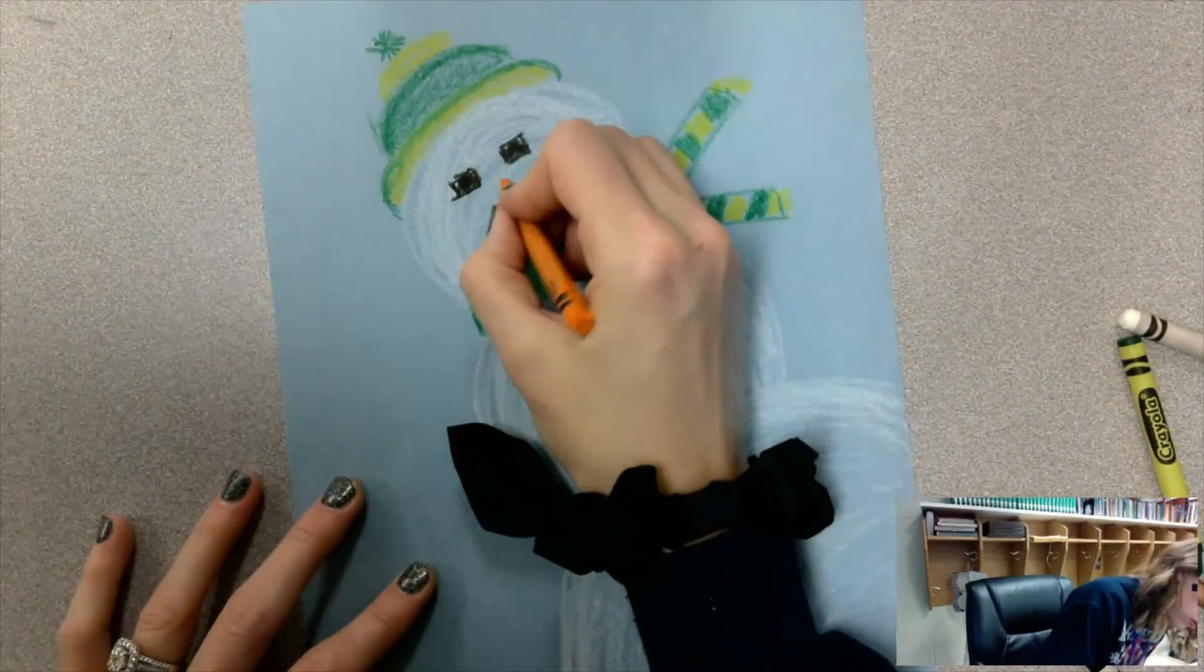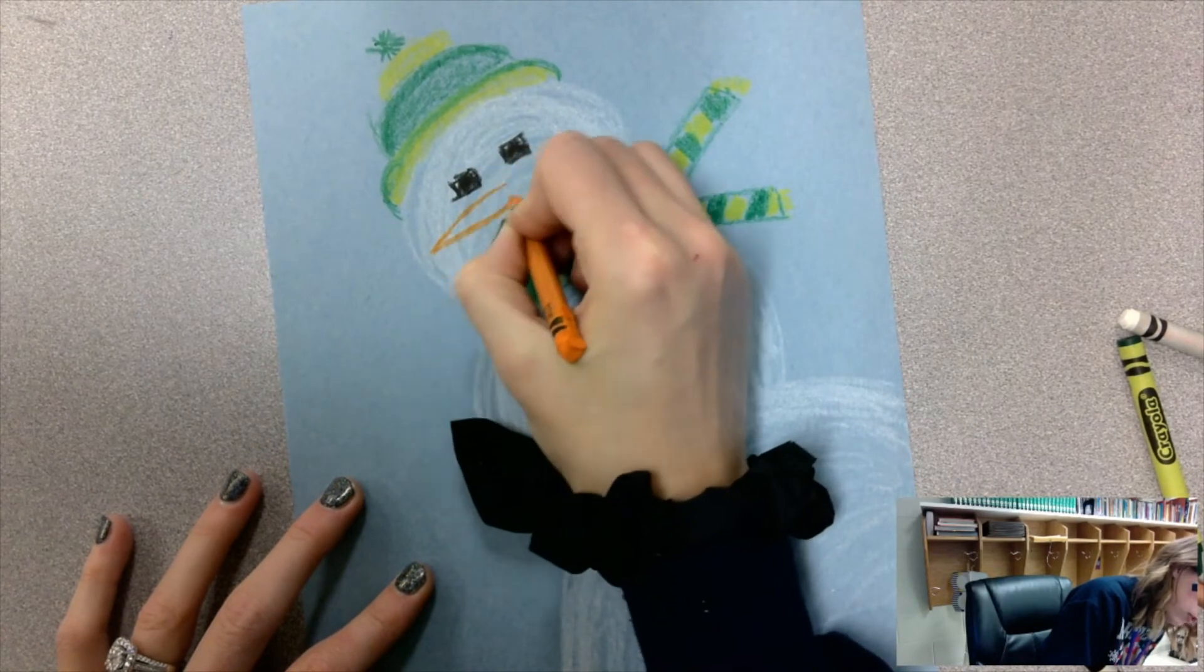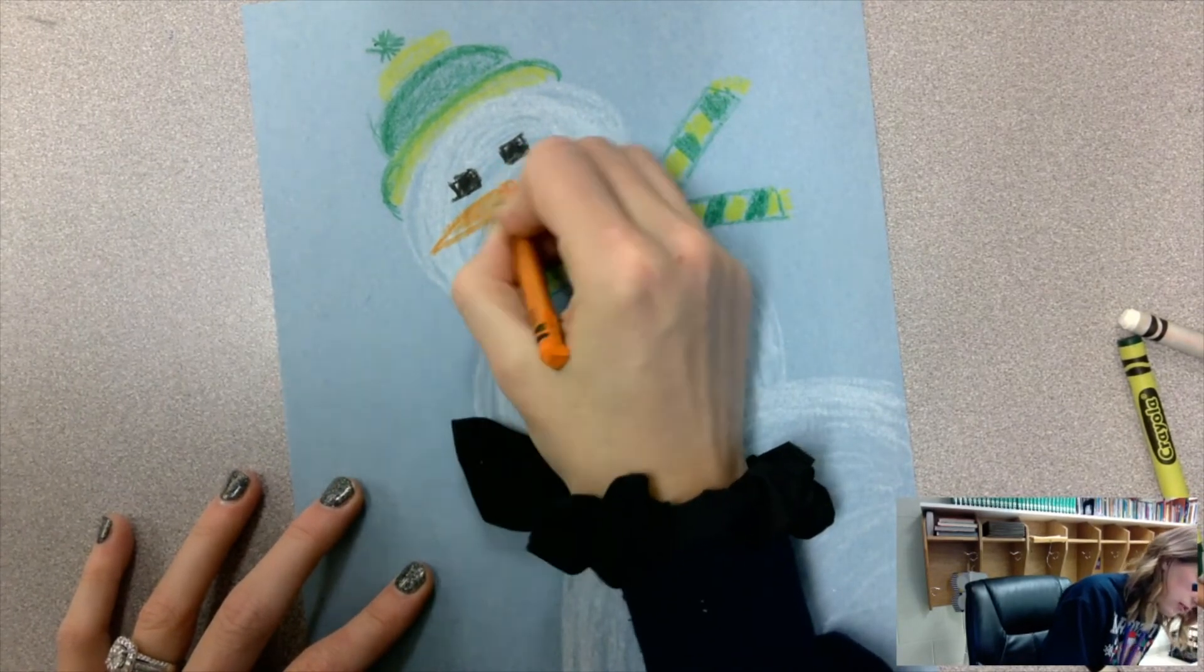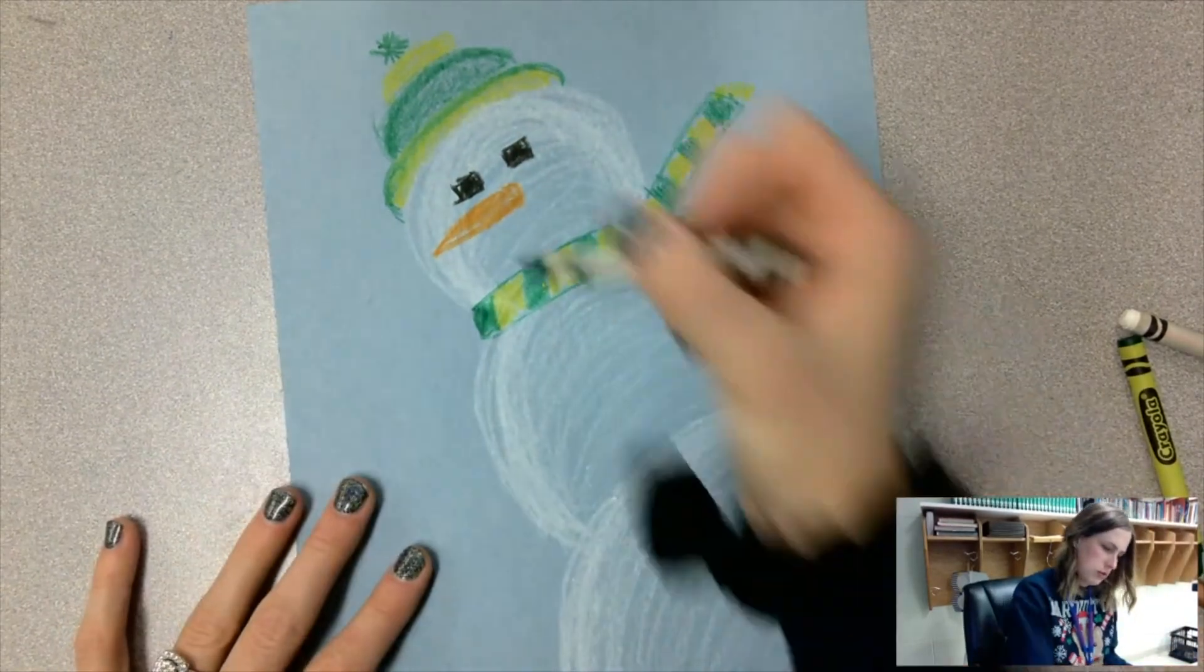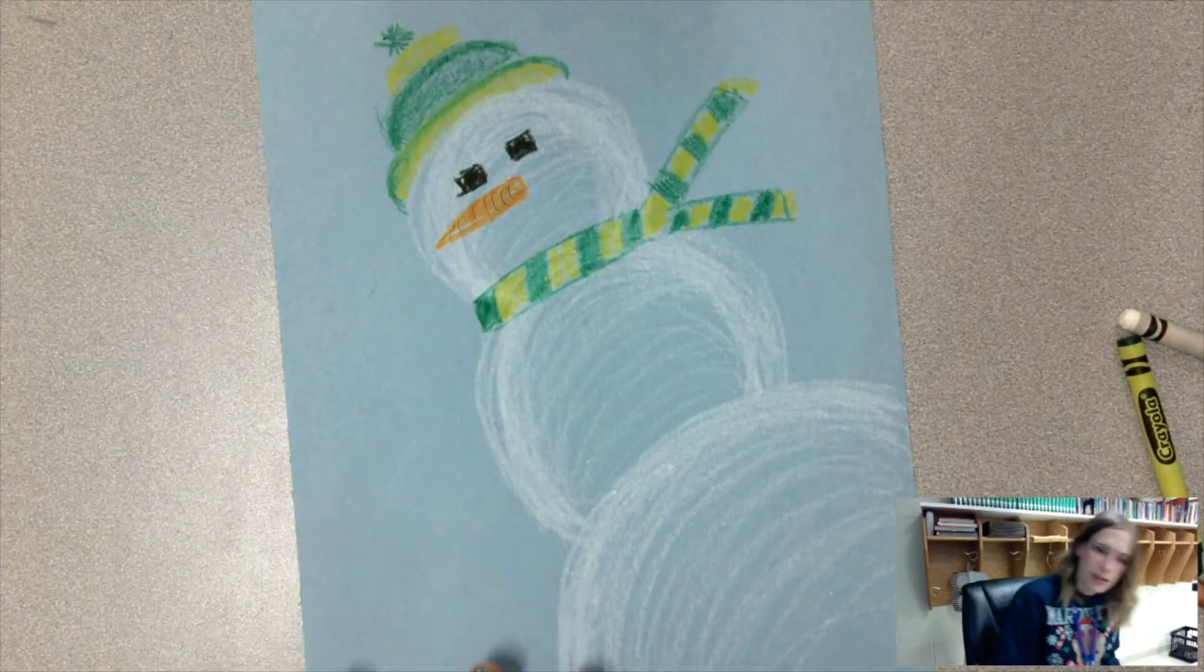Add his nose. I'm kind of thinking like Olaf from Frozen. I can curl it up like that. A lot of times the stripes kind of have those lines on it, so I'm just going to add those there.